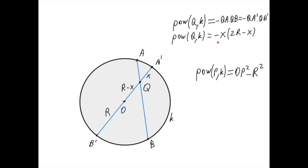We can rewrite X times (2R minus X) as (R minus X) squared minus R squared: the R squared terms cancel, X squared appears, and minus 2RX appears. This R minus X is the segment OQ, so this equals OQ squared minus R squared. Comparing with the earlier definition, OP squared minus R squared is the power of P, and OQ squared minus R squared is the power of Q — it is exactly the same definition. Therefore we can extend this definition to points inside the circle as well.